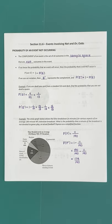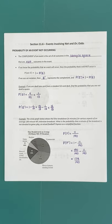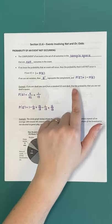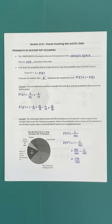Suppose you're dealt one card from a standard 52-card deck. We want to find the probability that you are not dealt a queen. You could think about all the different outcomes that represent not dealing a queen — a king, an ace, a jack, every other card except a queen — but that requires a good deal of counting.